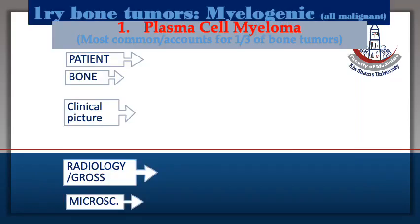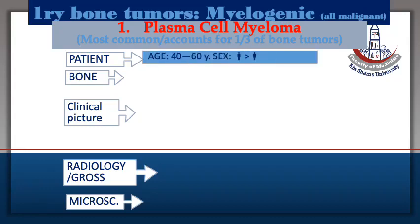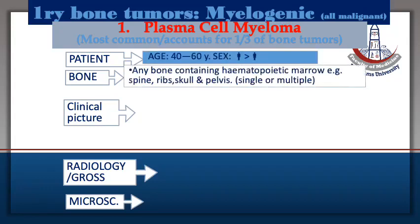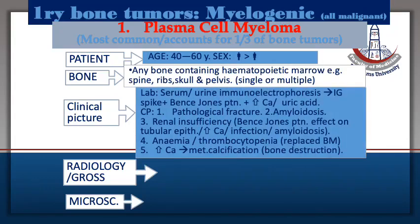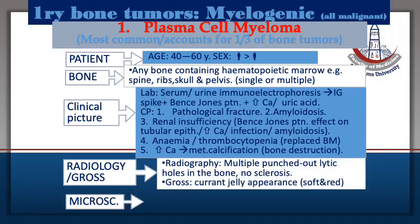The first myelogenic tumor we will demonstrate is the plasma cell myeloma. It is a multiple lesion affecting any bone of the body, especially the irregular bones. It causes renal insufficiency with pathological fracture and metastatic calcification with amyloidosis.